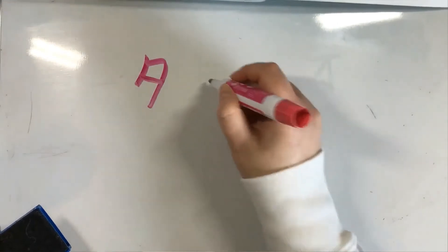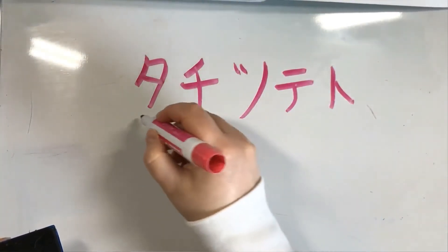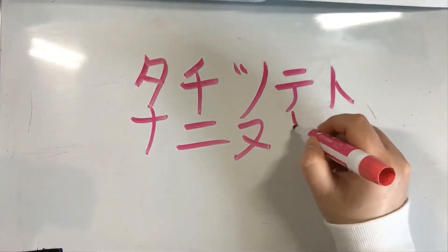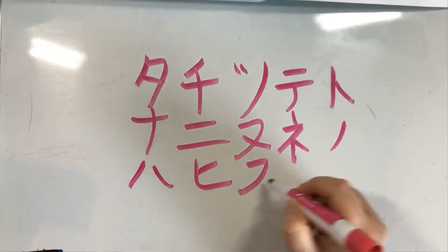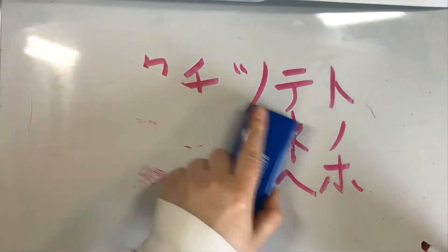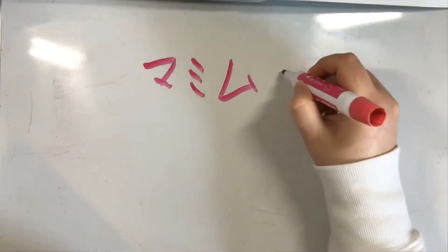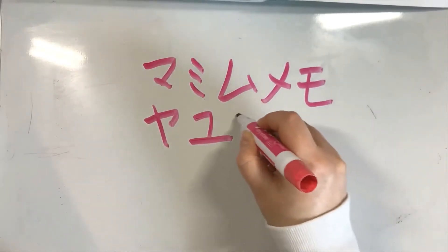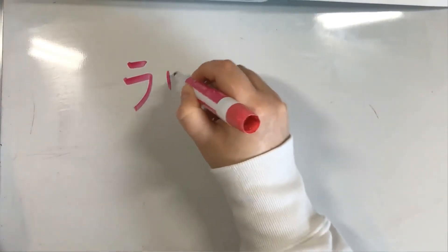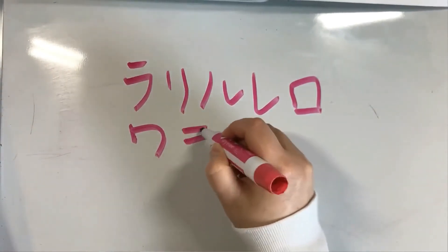Continuing the review: ta, chi, tsu, te, to, na, ni, nu, ne, no, ha, hi, fu, he, ho, ma, mi, mu, me, mo, ya, yu, yo, ra, ri, ru, re, ro, wa, o, n.